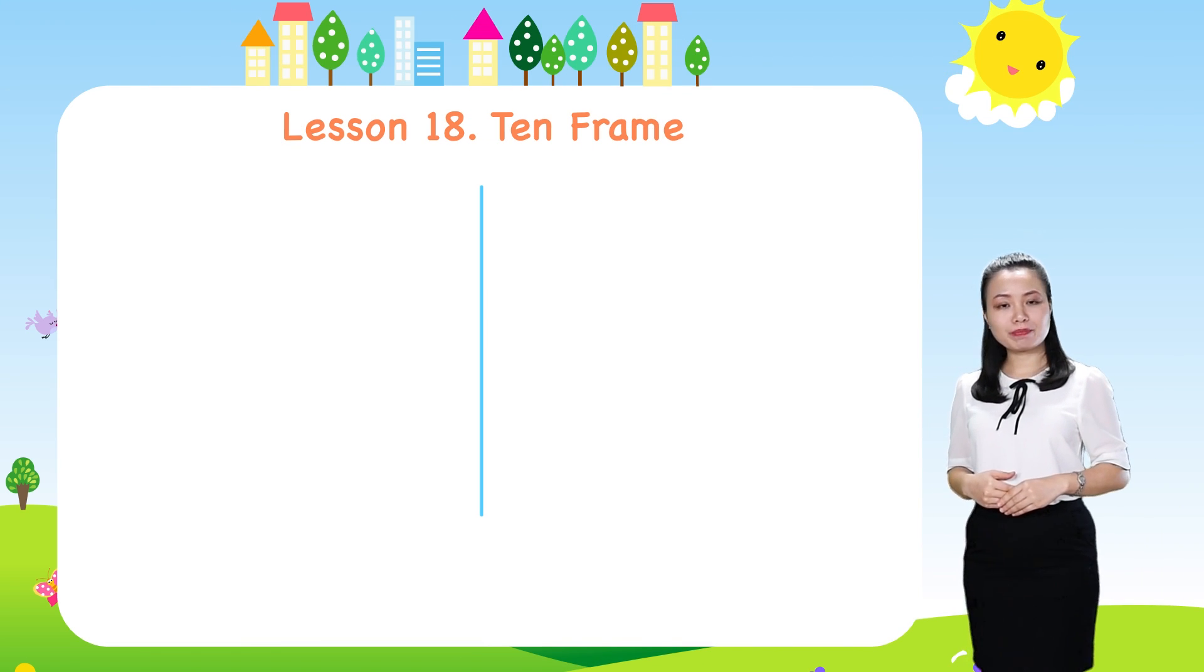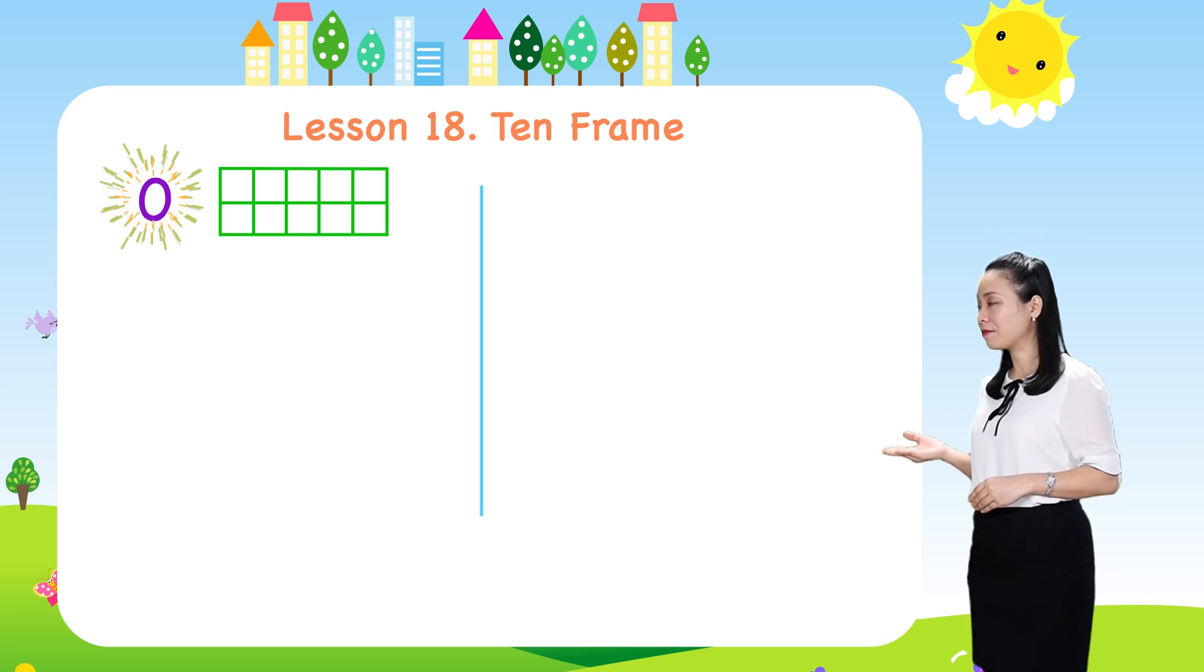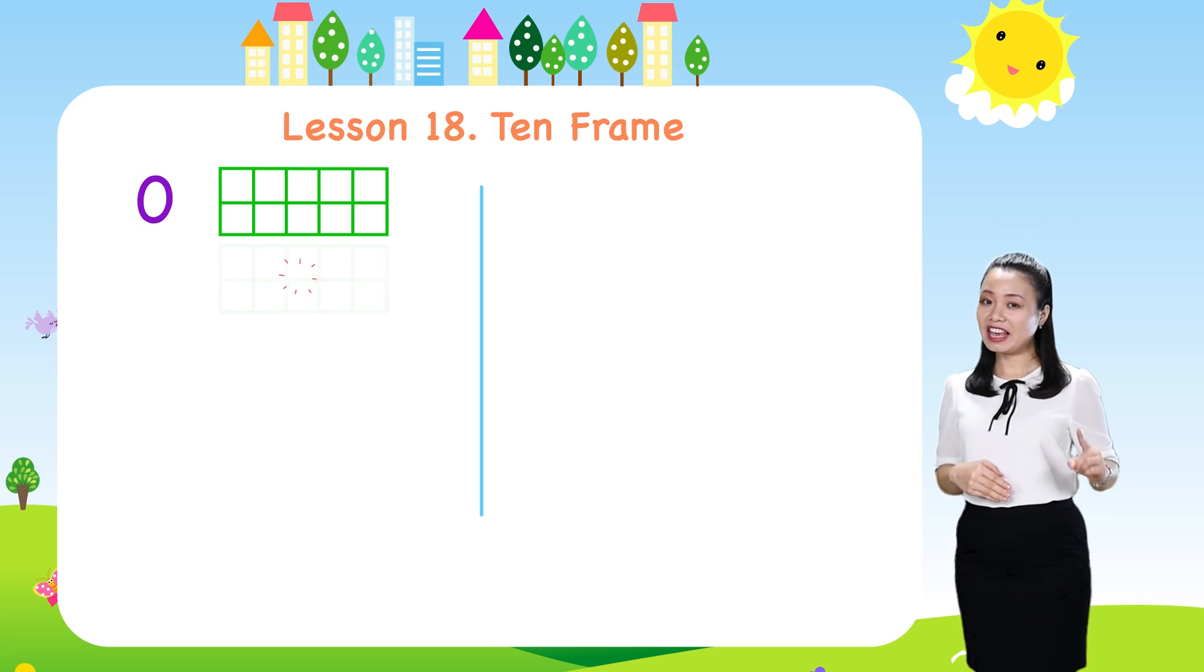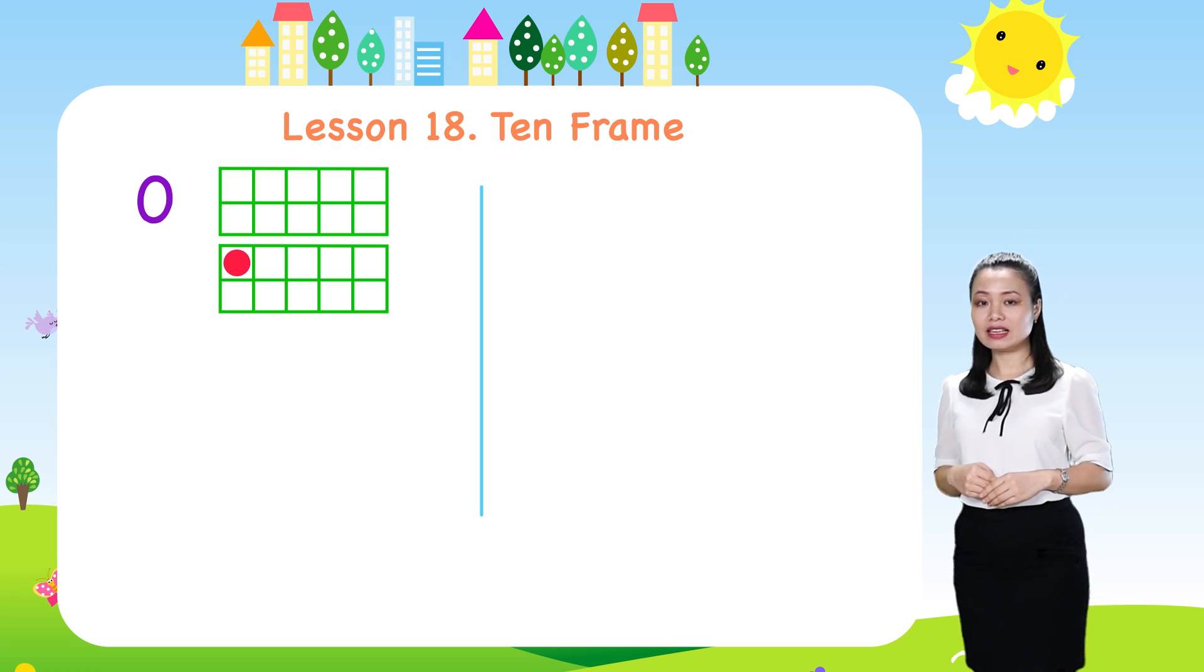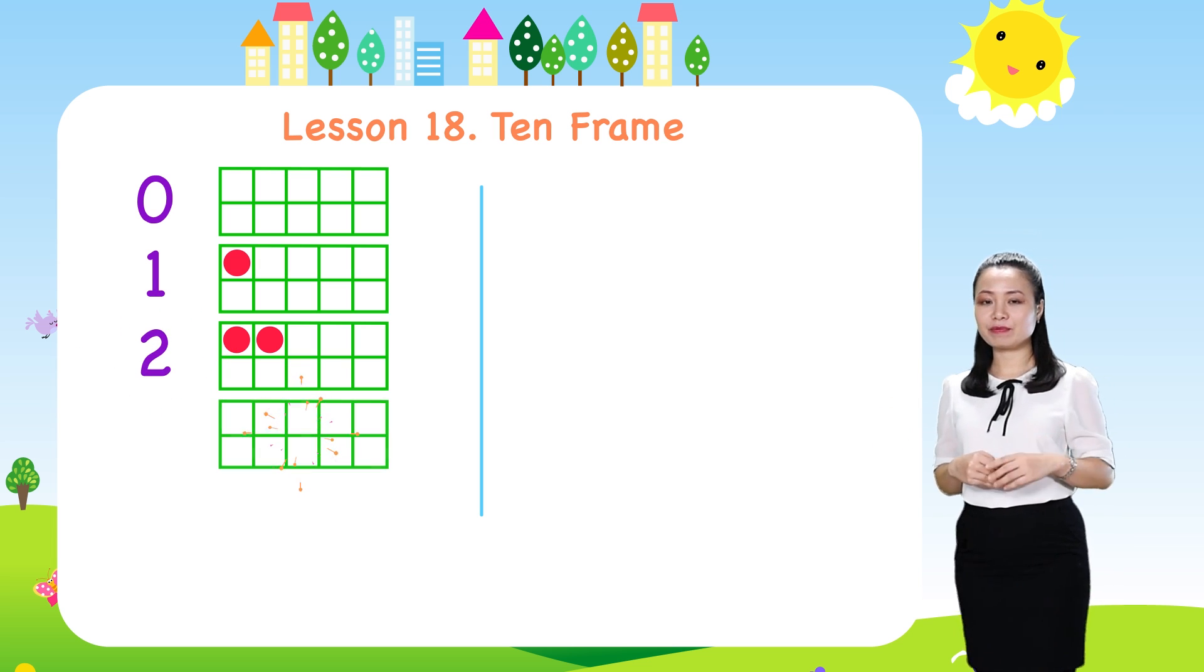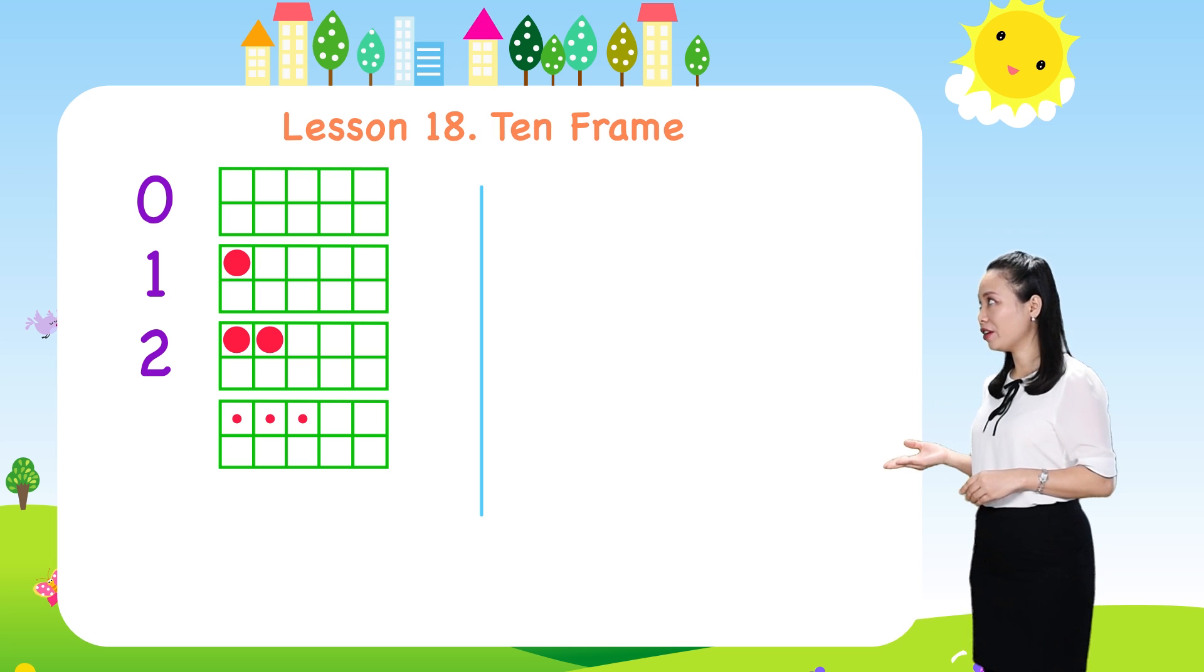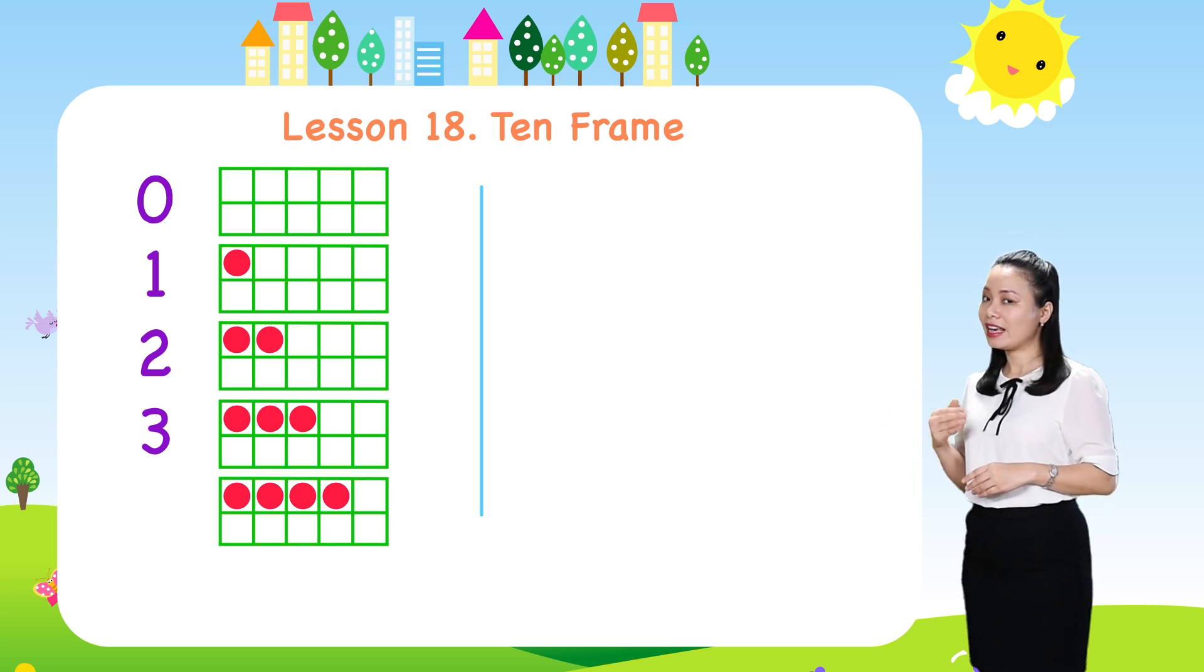Let's be more specific. If there is no dot in the frame, it represents number zero. If there is one dot in the frame, it represents number one. If there are two dots in the frame, it represents number two. If there are three dots in the frame, it represents number three.